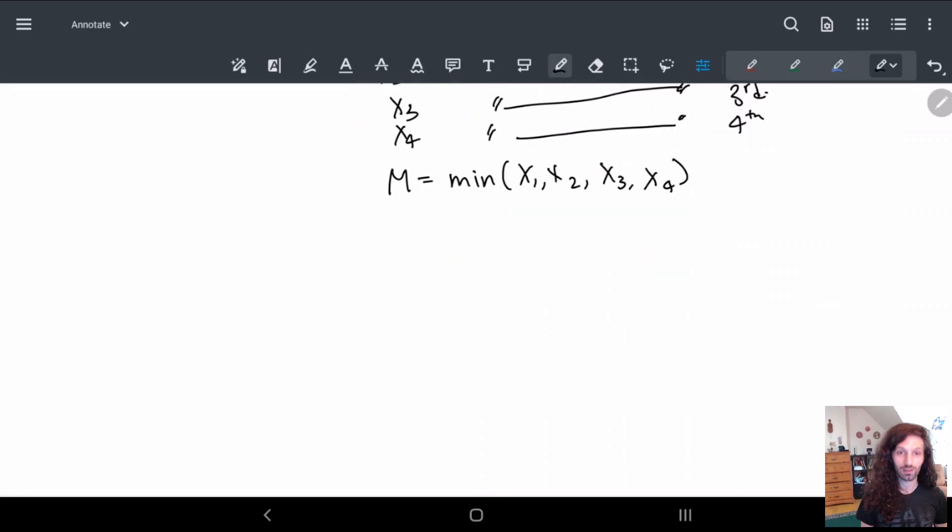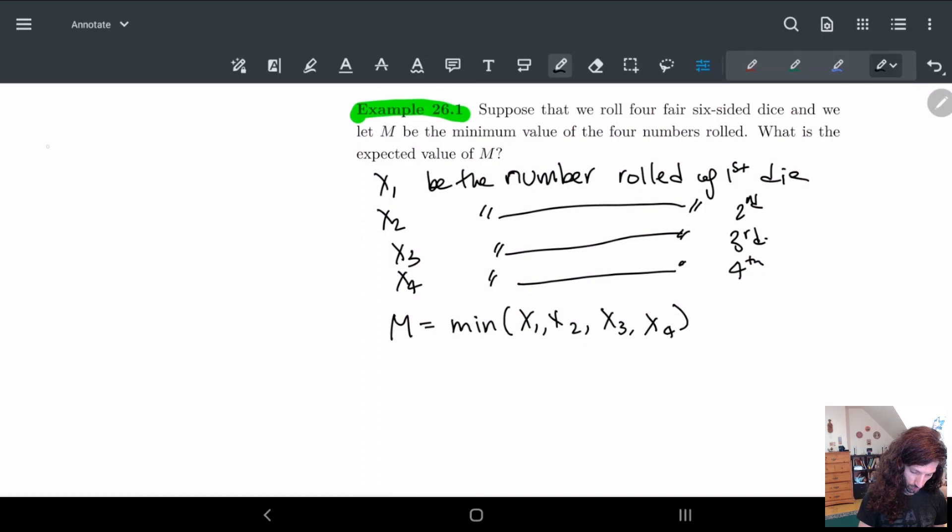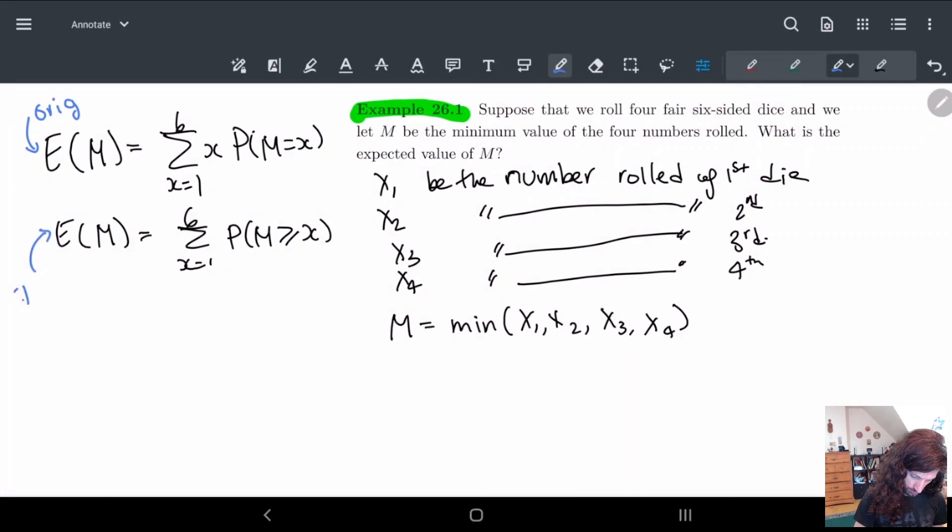So if I wanted to calculate the normal way, let me first write both ways of doing this. So the expected value of M, this is either we can take the sum of all x's, where probability of M equals x. So here x goes from the values 1 to 6, it's a six-sided die. The alternative way that we saw this is to do the summation of x equals 1 to 6. This is the original definition, this is the tail formula. So they're both equal to one another, it's just a different way of looking at things.